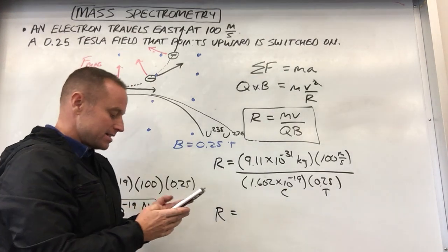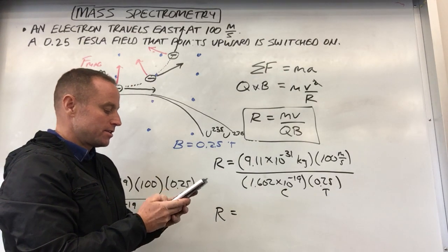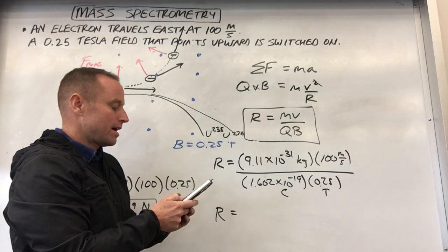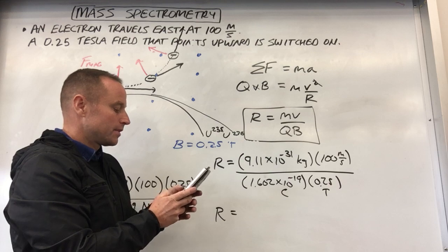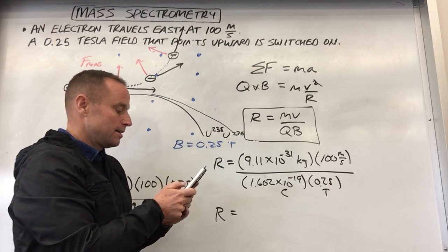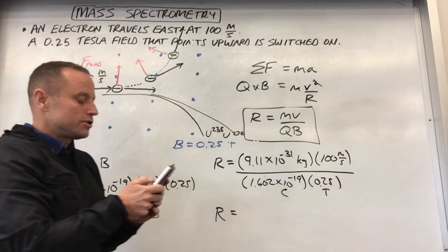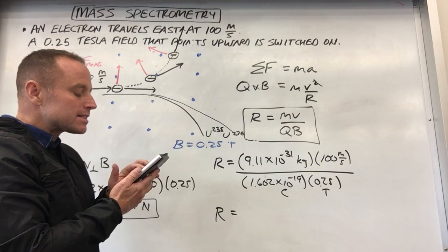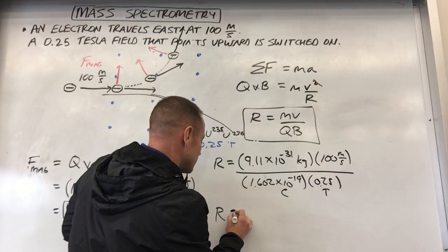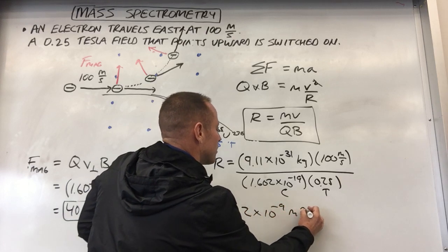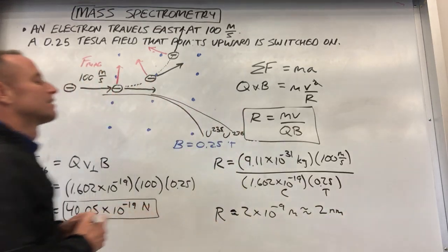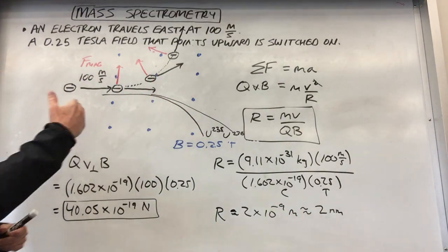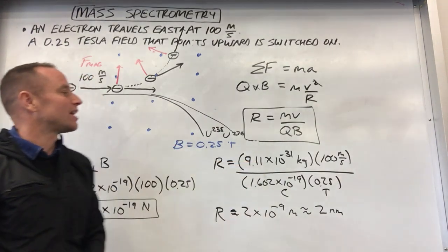And so then that's going to give us the radius of curvature. So just kind of punching that in really fast: 9.11 times 10 to the minus 31 times 100, divide by 0.25, divide by 1.602 times 10 to the minus 19. We get like 2 times 10 to the minus 9 meters, or about 2 nanometers. So about six atomic diameters or so, the radius of curvature of this thing. So it bends really sharply. This is quite a large field, and like I say, electrons are very light, easy to push around.